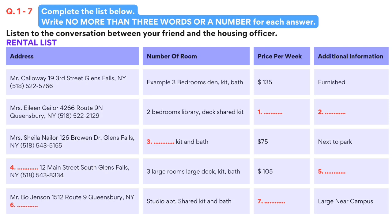Well, we were first wondering about the house on 3rd Street. We can see that it is furnished and rents for $135 a week, but can you tell us how many bedrooms it has? Let's see, in addition to the den, it has three bedrooms. The rental on 3rd Street has three bedrooms. So in the example, three bedrooms has been written down in the number of rooms column for 19 3rd Street.